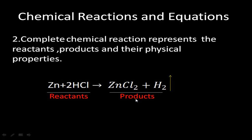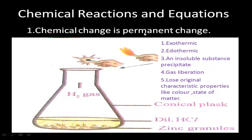Chemical change is a permanent change. In any chemical reaction, it may be exothermic or endothermic. A precipitate may be formed, or gas liberation may occur. Also, in any chemical reaction, the original characteristic properties such as color and state of matter are lost. After the reaction, the color may change, and the state of matter may change — for example, gas to solid, solid to gas, gas to liquid, or liquid to solid.